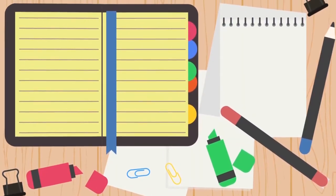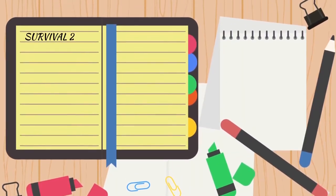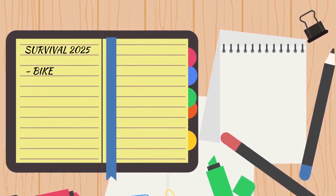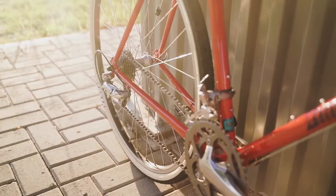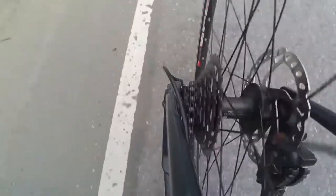So, the first thing to put on your survival 2025 list is a bike. It will help solve the problem with both getting around and communication.